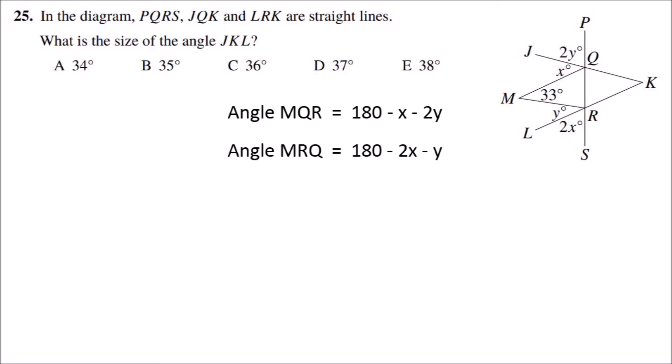Because MQR is a triangle, then 33 plus 180 minus x minus 2y plus 180 minus 2x minus y equals 180. So that means that 180 equals 393 minus 3x minus 3y.